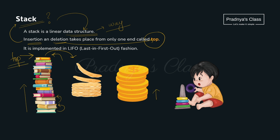You might have played the game of rings in your childhood. In that game too, if you want to keep any ring, you keep it from the top position. That's why stack is also called LIFO — Last In First Out. The item which is inserted last will be the first one to come out.